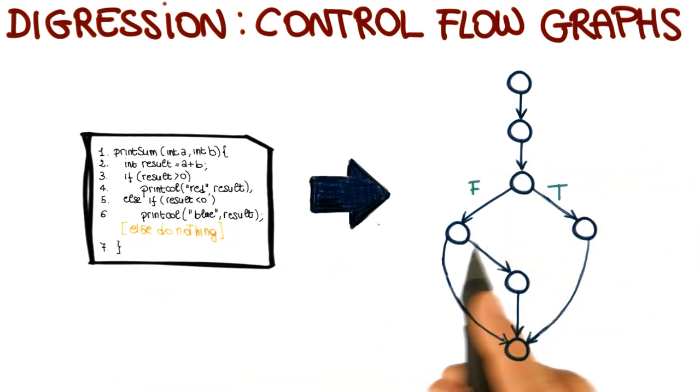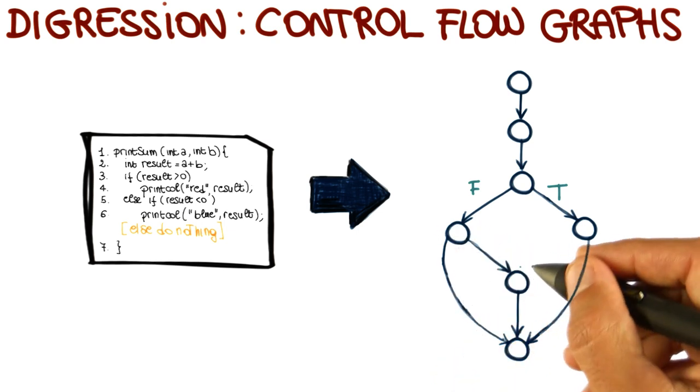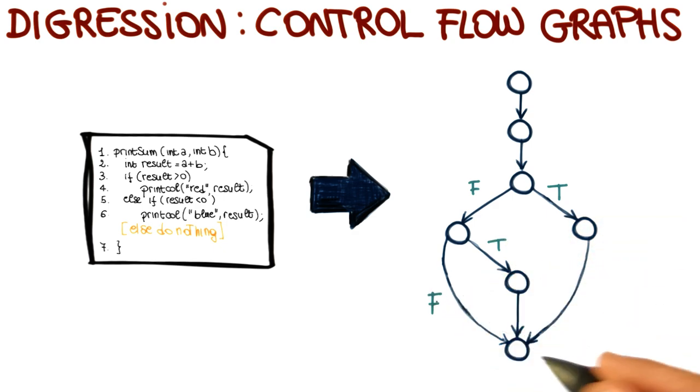Now at this point, similar thing. Statement five, which corresponds to this one, we have another if statement. And if the statement is true, then we get to this point, and if it's false, we get to this point.